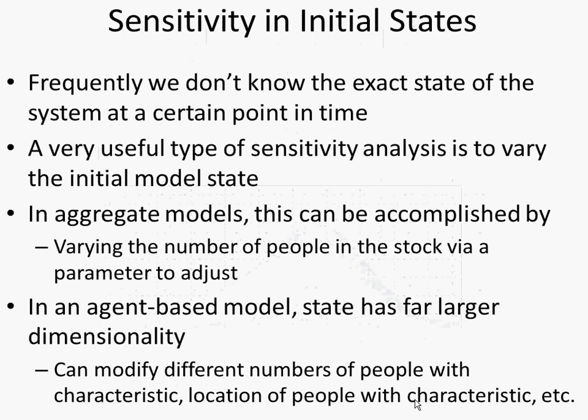An important point here is that in system dynamics models, a very important uncertainty concerns initial states. We typically don't know exactly how many people start in each stock at each time. In an aggregate model, we can actually vary that more readily — we examine the effects of dividing up people differently among the stocks so that it matches our data. In an agent-based model, the initial state is much more variable, because we have all these individual people that could start in different states. So typically what you adjust is the fraction of the population that starts with different states, without trying to go through all possible combinations of which particular people start in a given state.